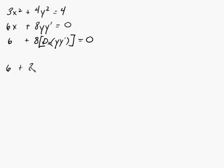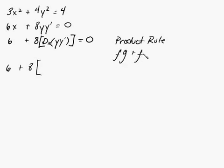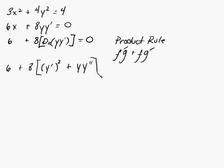So you have 6 plus 8 times the quantity — now we're going to use the product rule here. The product rule is f'g + fg', in case you're a little rusty. So that's going to be the derivative of f times g. The derivative of y is 1 times y' times y', which is going to be (y')² plus y times y''.